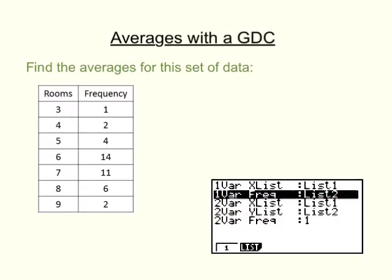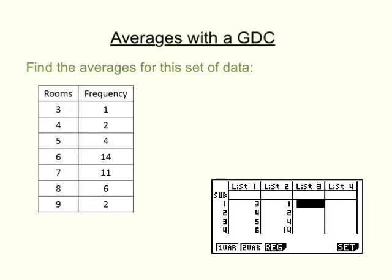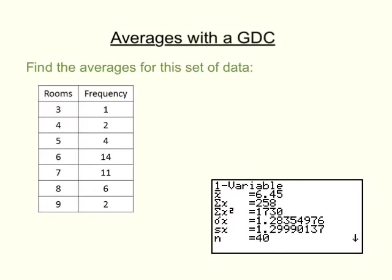Once they say list 1 and list 2, we go back to the menu. Again, we're doing one variable analysis because we only have one set of data, so we hit one var. The same symbols appear. The mean, x-bar, is equal to 6.45 — that's the top one. We've got the sum again, the values we don't need, and n telling us there are 40 things — that is, if we add up the frequency column, we get 40.